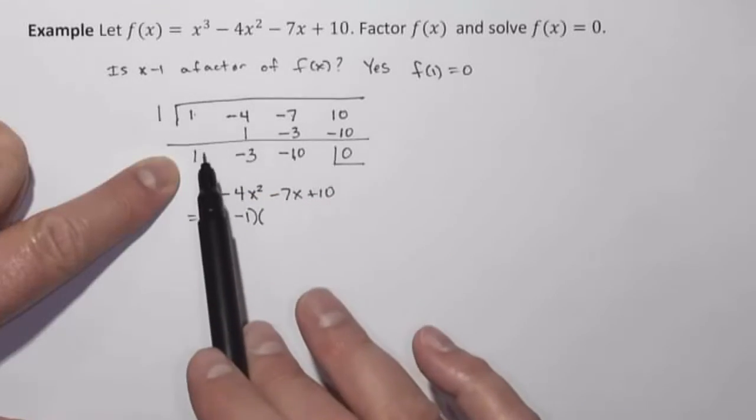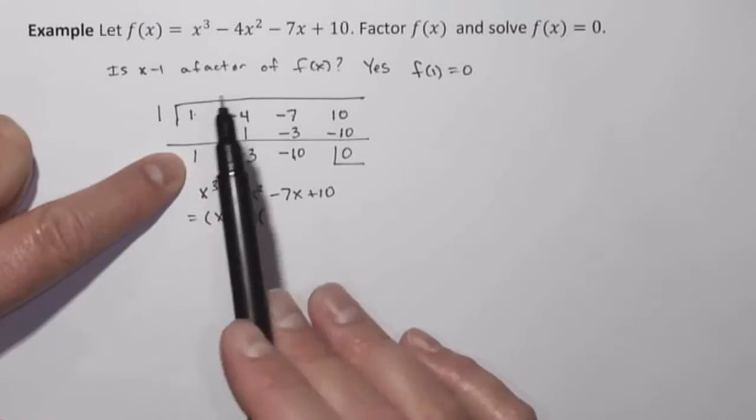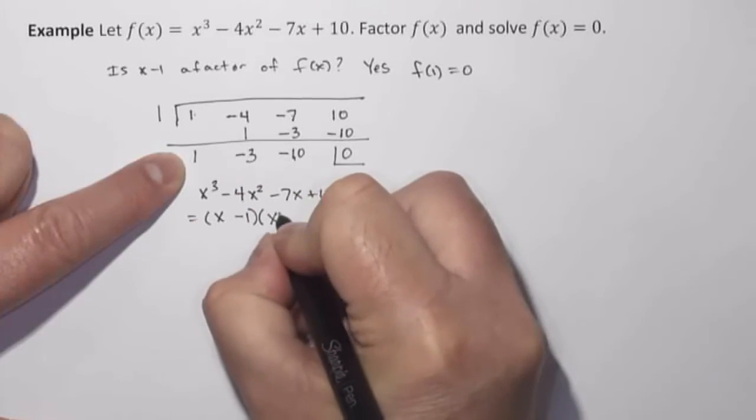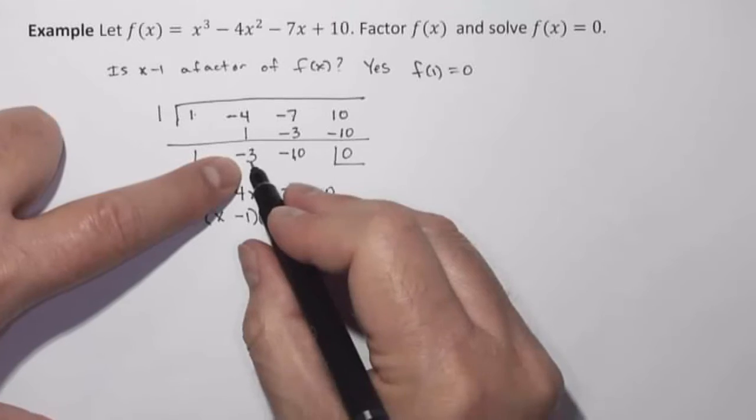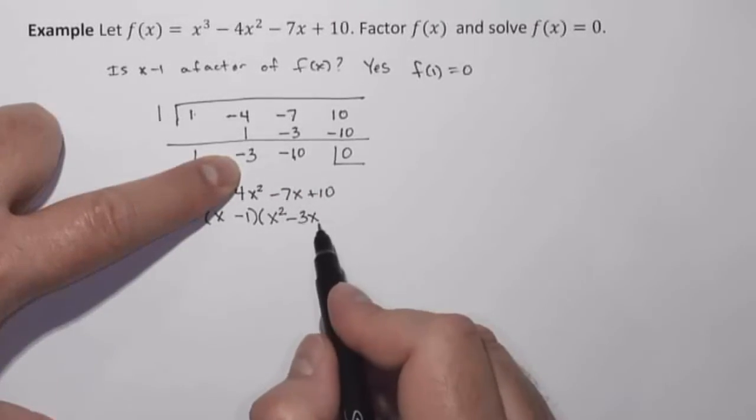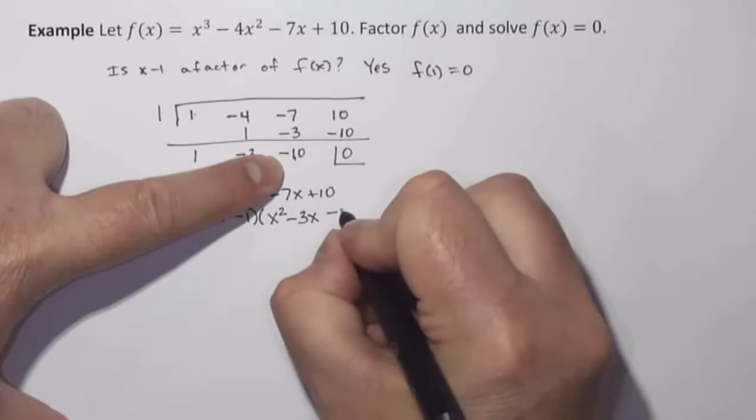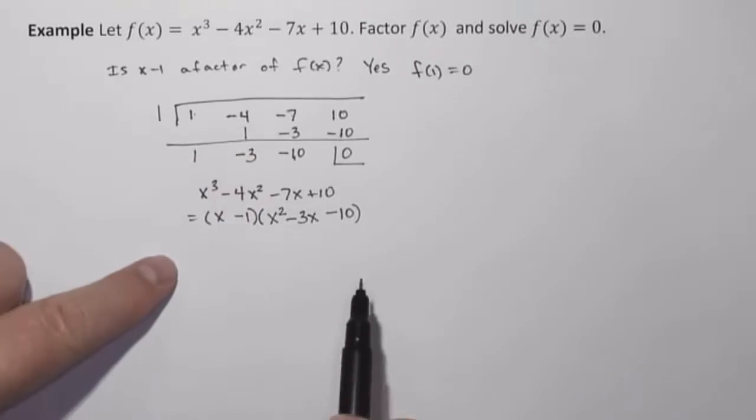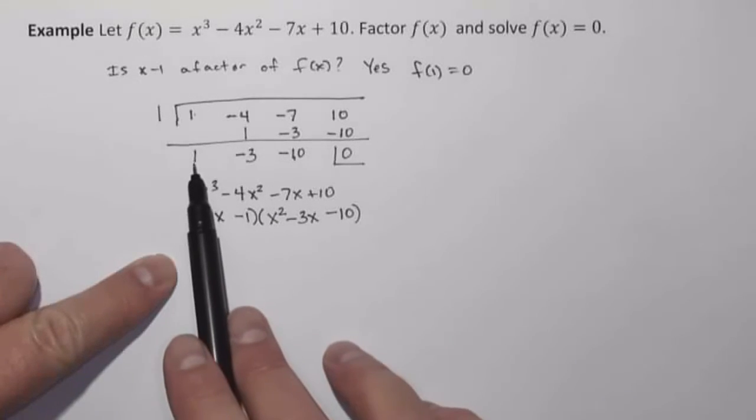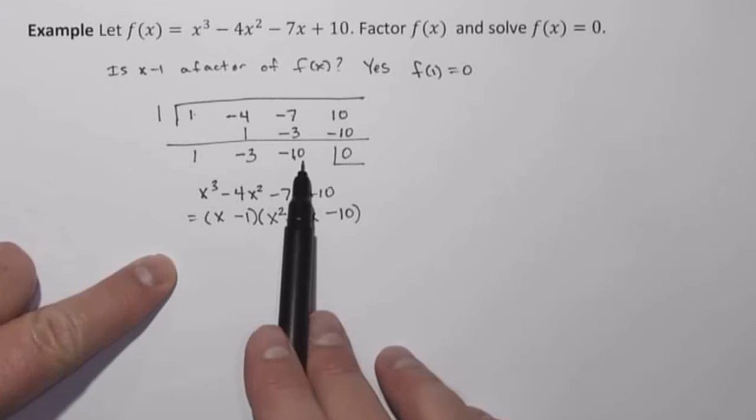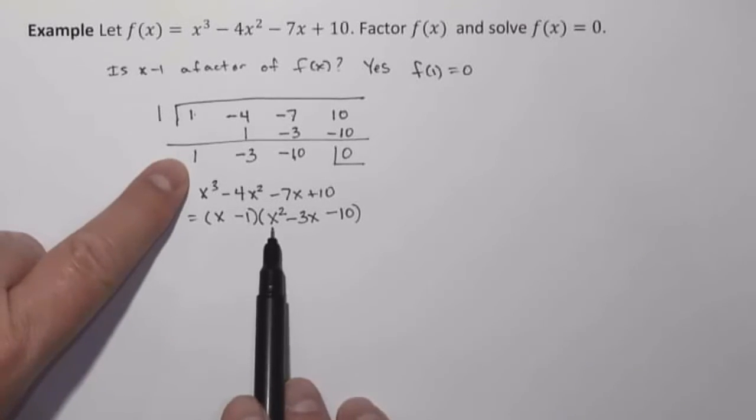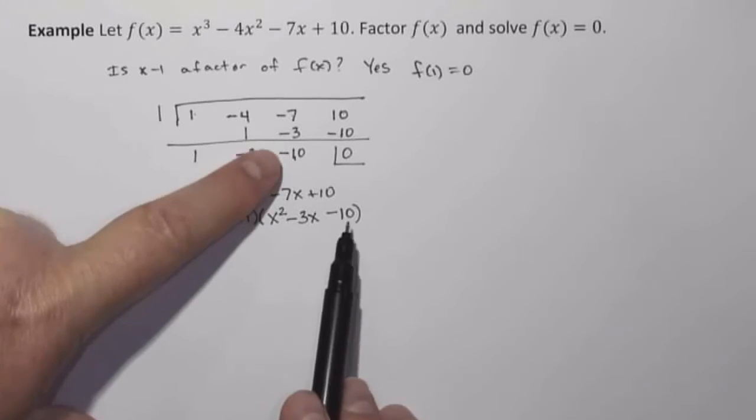Well, x cubed divided by x would be x squared. So our term inside the parentheses here is going to be 1x squared. And then minus 3, the variable will be x, dropping down from x squared to x, and then minus 10. So because x minus 1 is a factor, and whenever I did synthetic division, I got 1, negative 3, and negative 10, I know that this factors into x minus 1 times, again, 1x squared minus 3x minus 10.